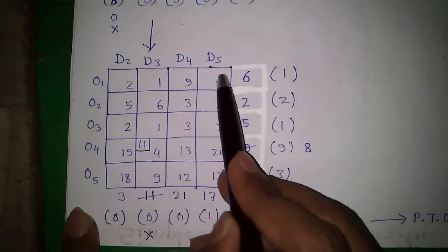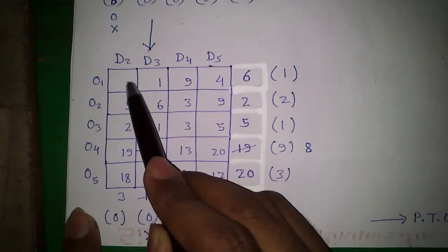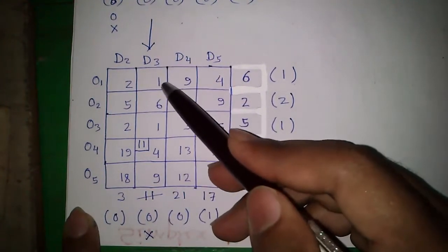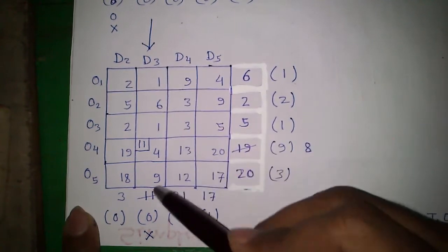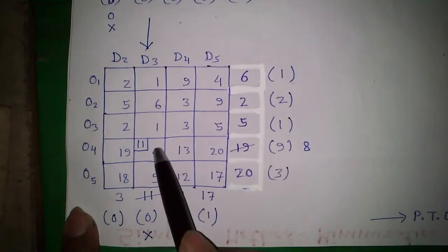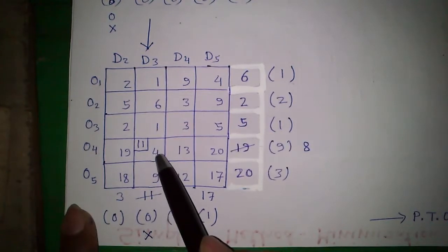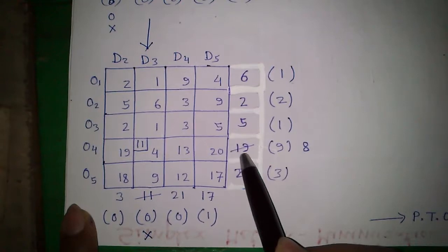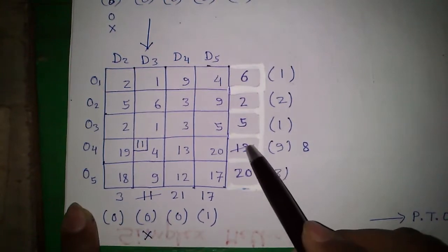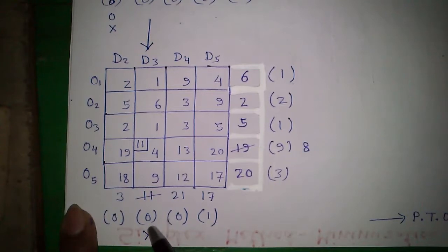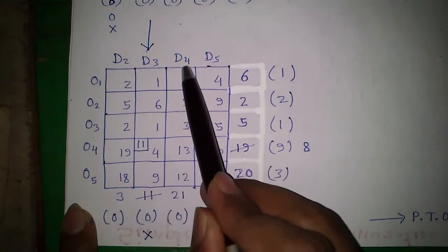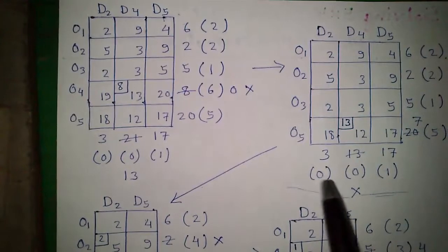Again, same process. The smallest number in row 1 is 1, next smallest is 2, so 1 subtracted from 2 is 1. For D3, the smallest number is 1 and next smallest is also 1, so 1 subtracted from 1 is 0. Again look for the largest number, which is 9. Against this 9, the smallest number is 4; demand is 11 and supply is 19. We allocate the minimum value, which is 11. After allocating 11, demand becomes 0 and supply becomes 8. D3 is exhausted; we will not continue with the D3 column in the next table. We will continue only with D2, D4 and D5.